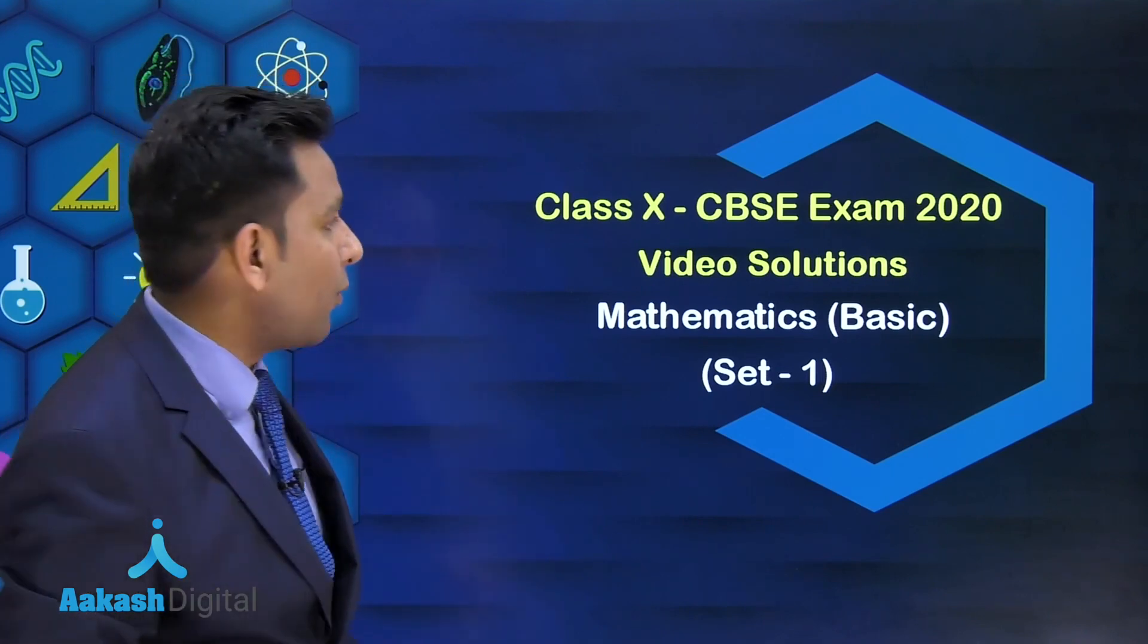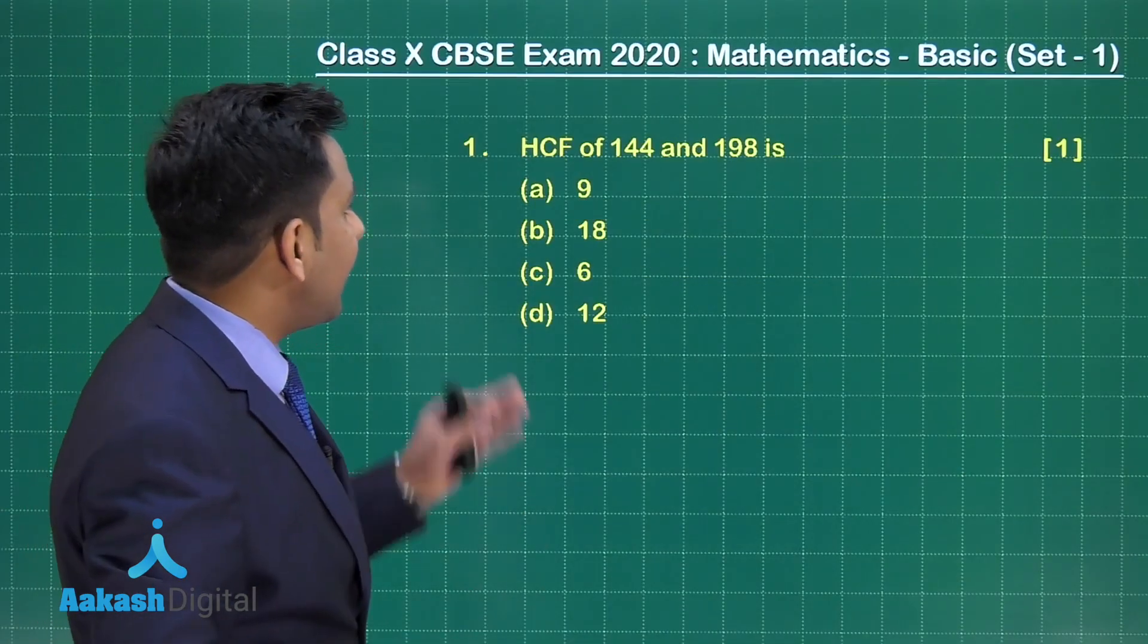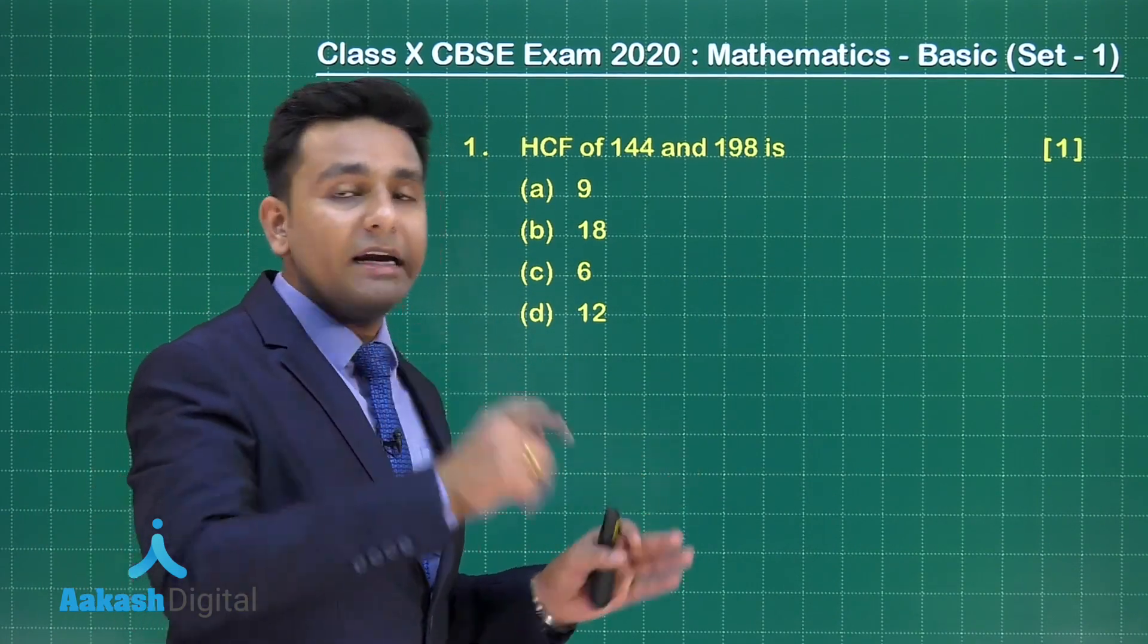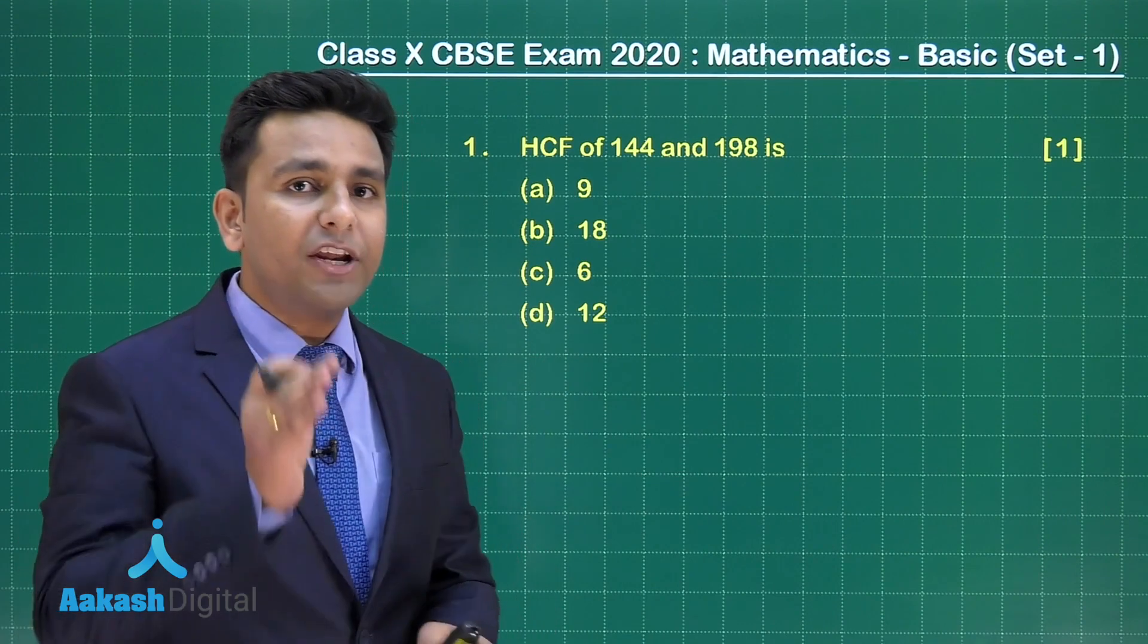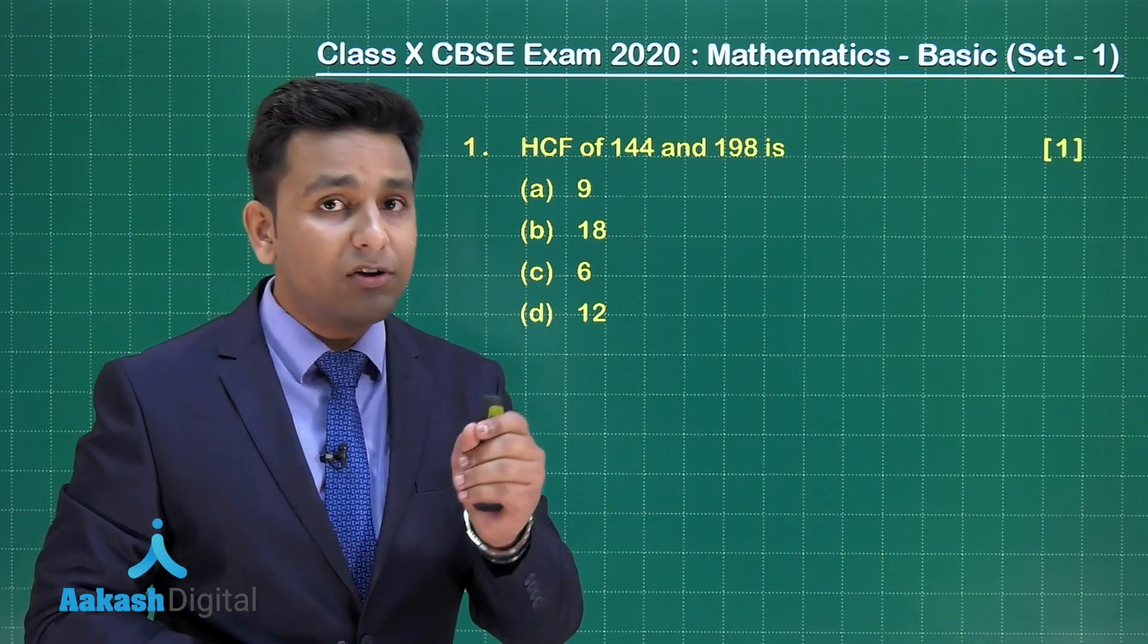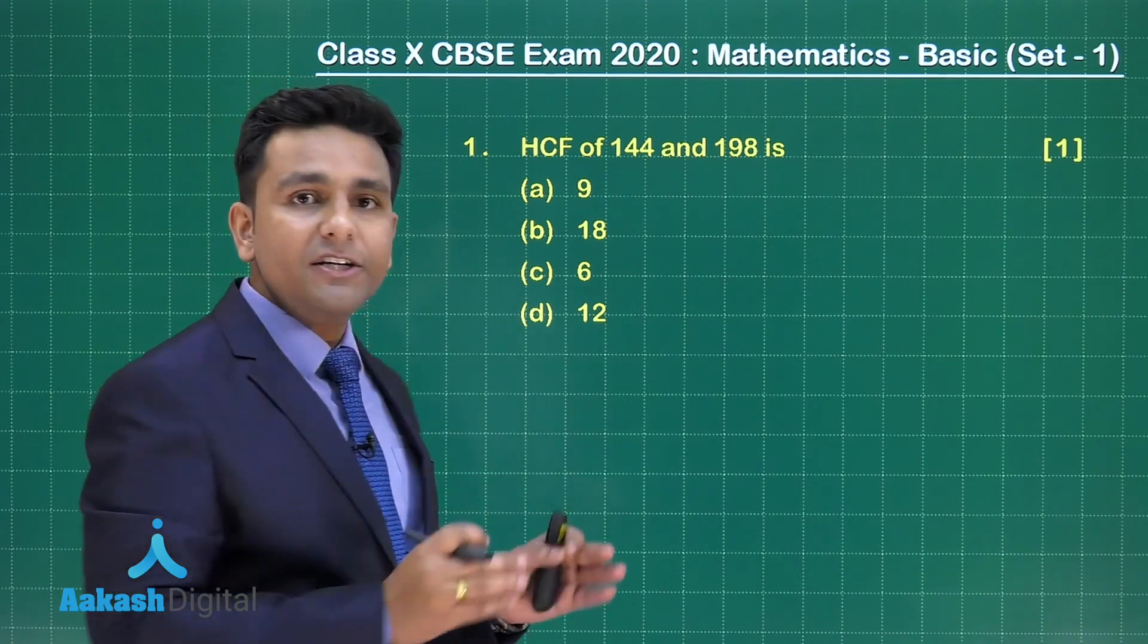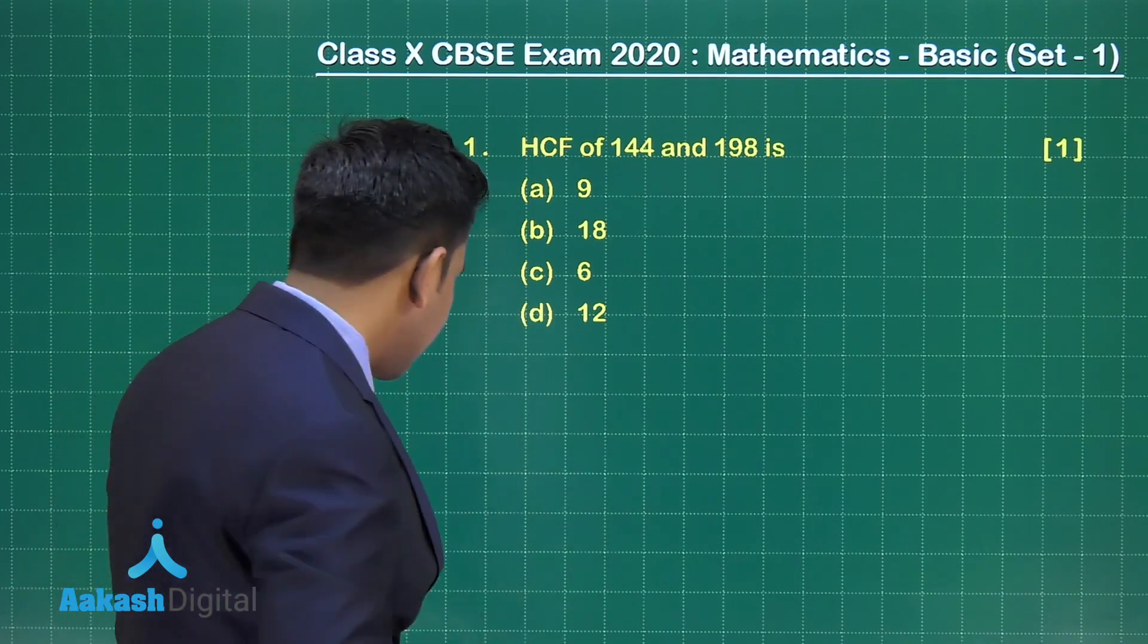Let's start with question number 1. This question states HCF of two numbers 144 and 198 is. This question is from the very first chapter, Real Numbers, and the topic is Euclid's division algorithm. Let's solve this question.